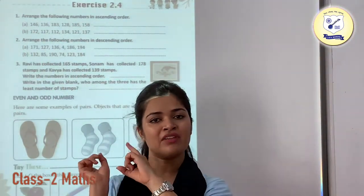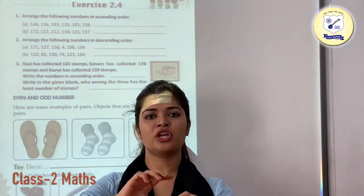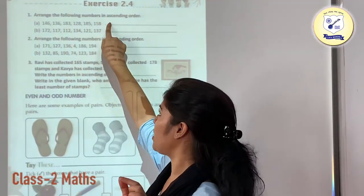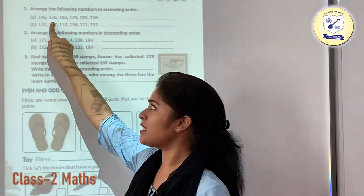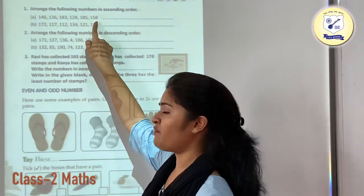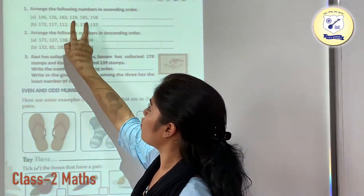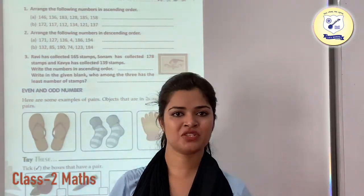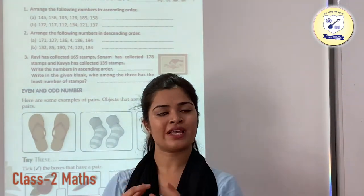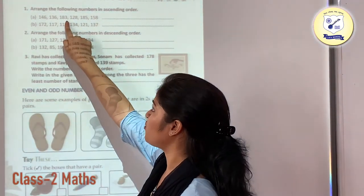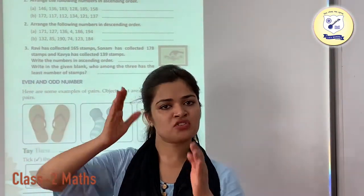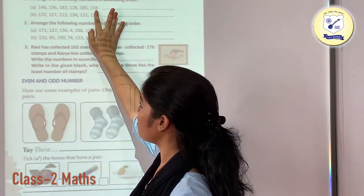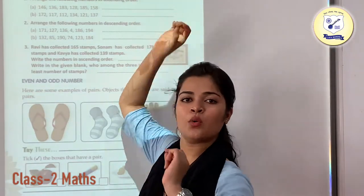Since we are having different digits on the tens place value, we are going to keep them from smallest to the biggest. The smallest number is 128, after that 136, after that 146, then 158. Now we are having two numbers with the same digit on the tens place, so we check the ones place — this is 3 and this is 5. Since 3 is smaller than 5, this whole number is smaller than 185. So after 158 comes 183, then 185.